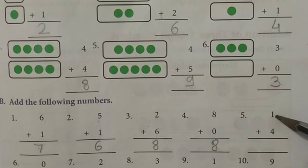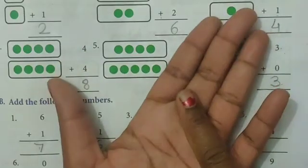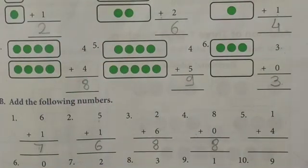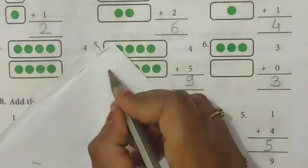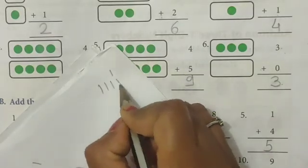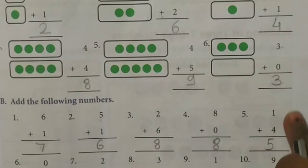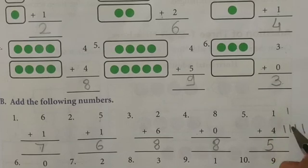Next, fifth example: one plus four. Take your one finger plus four — count one, two, three, four, five. Answer will be five. Or by drawing lines: one line and four lines — count all one, two, three, four, five. Answer will be five. If you don't know, just draw the lines like this.